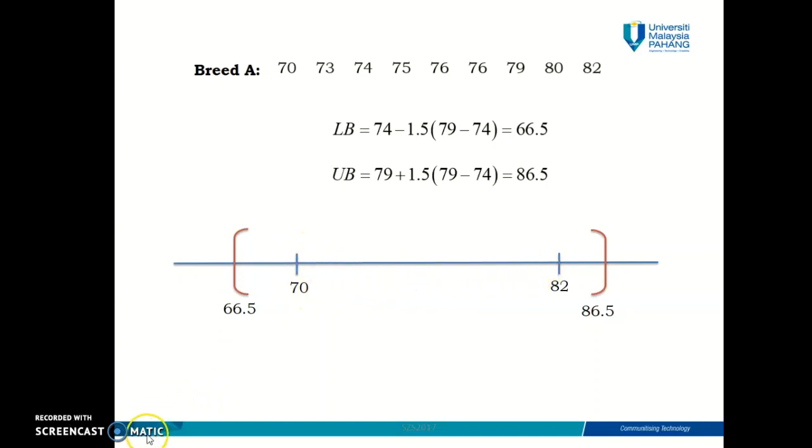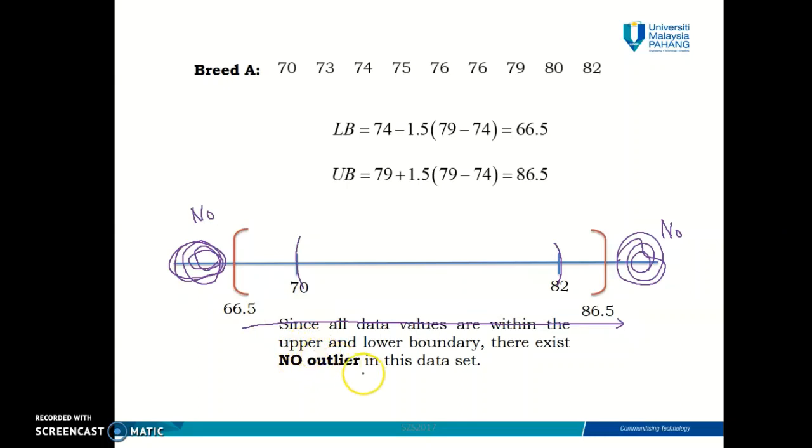So let's check. This is your data. So let me change the color of my pen, not to be confused with the boundary. This is your data. Okay, your data is from 70 until 82. So do you have any data value that is greater than 86.5? No. Do you have any data value that is smaller than 66.5? Also, no. So every data value is within the boundary 66.5 and 86.5. So therefore, there is no outlier in this data set. Okay, since all data is within the upper and lower boundary.